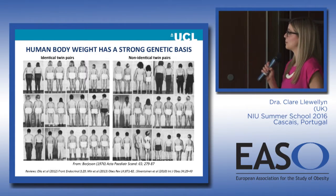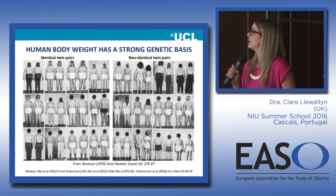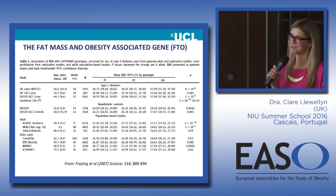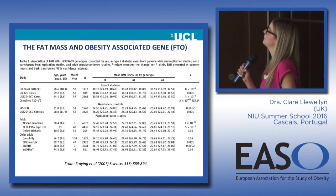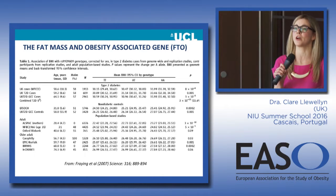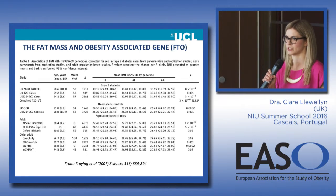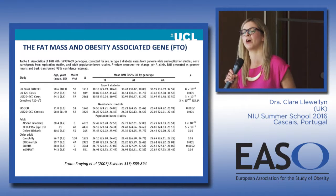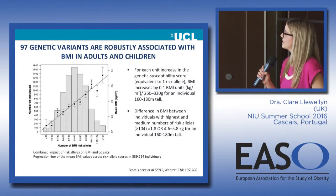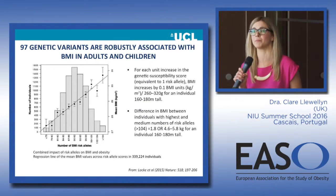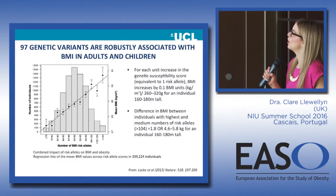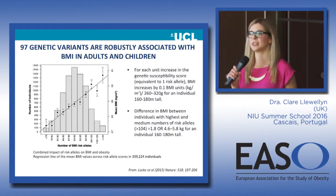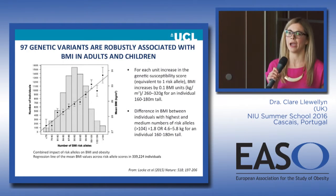There's a very strong genetic basis to obesity from family and twin studies. Genome-wide association studies in the noughties started to identify some of the common genetic variants involved. The first to be discovered was the fat mass and obesity associated gene called FTO. If you are an adult of average height carrying two copies of the high-risk version of FTO, you're about three kilos heavier than an adult who carries two low-risk versions. Since then, 97 common variants have been robustly associated with weight.